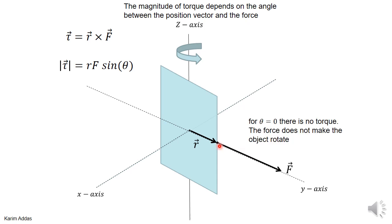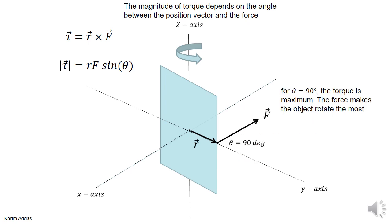If you put the angle to be 0 degrees, then there's no torque, because of course this force does not want to make the object rotate. Torque is maximum when you have angle 90 degrees. And anywhere in between 0 and 90 degrees, you have an intermediate value of the torque.